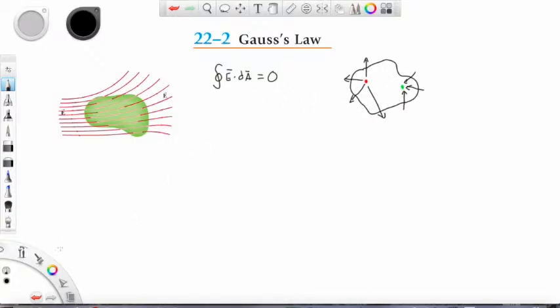So hence the only case when we can have non-zero flux is when we have some electrical charge Q enclosed within our surface.